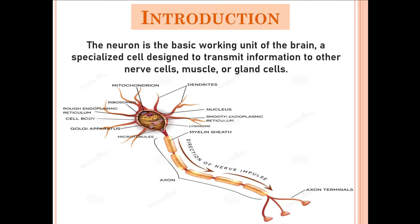The neuron consists of three major portions. The first part consists of dendrites, the other part is the cell body, and then a long thread-like structure is the axon. All these parts collectively form a neuron and their function is to generate and propagate nerve impulses. The dendrites receive nerve signals, the cell body integrates them, and the axons pass these signals onward towards glandular cells, muscle cells, or other nerve cells.